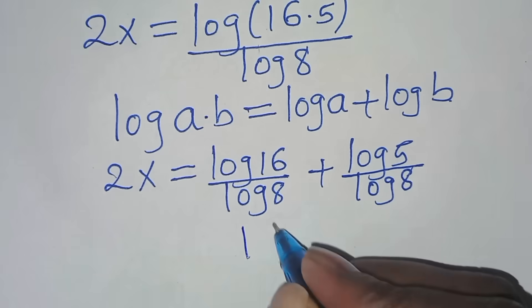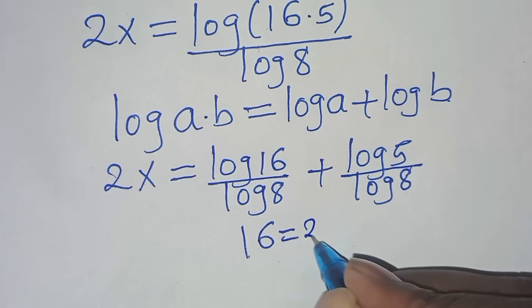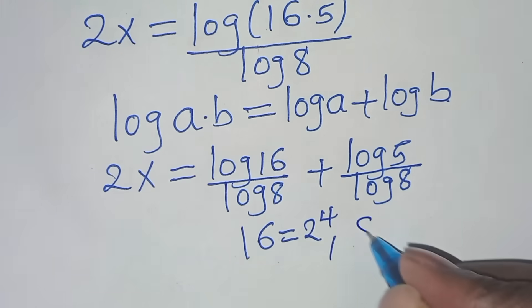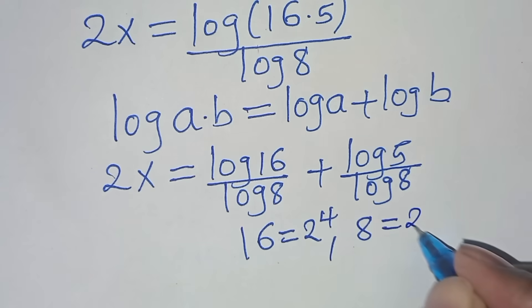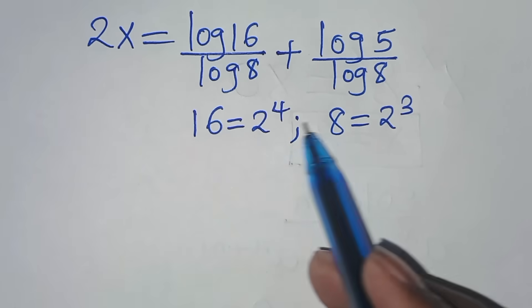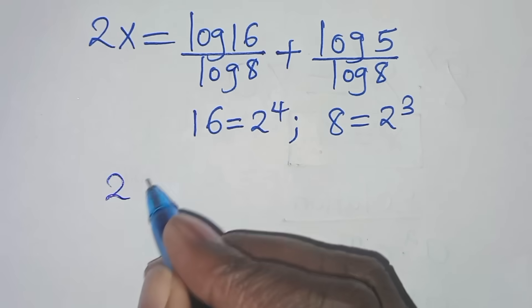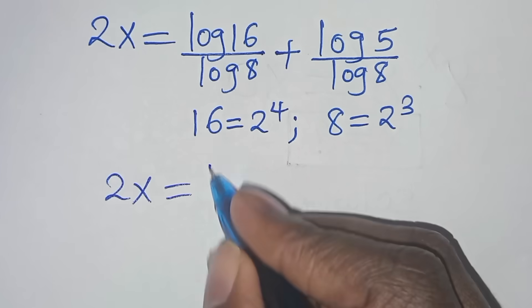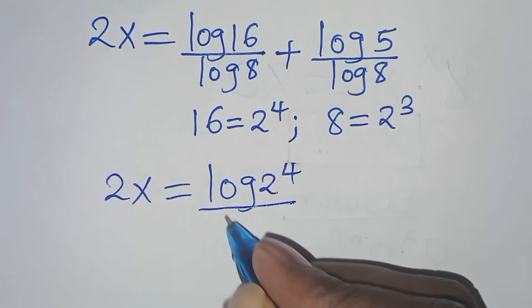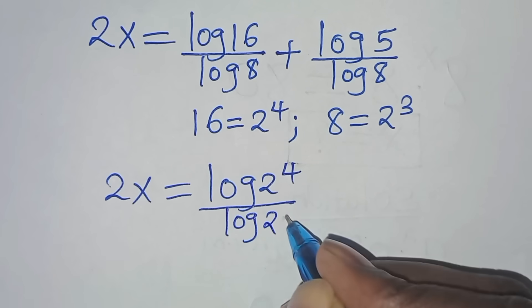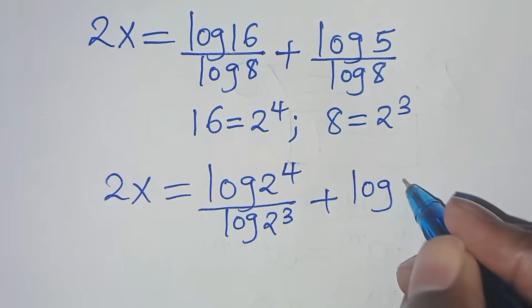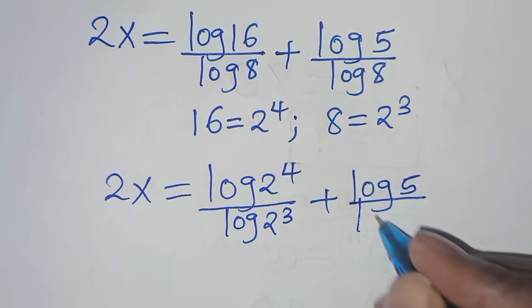Now, log(16 × 5) is in the form of log(a × b), which we can express as log(a) plus log(b). Applying this logarithm property, we have 2x equal to log(16) divided by log(8), then plus log(5) divided by log(8). The next step is that we can express 16 as 2 to the power 4, and we can express 8 as 2 to the power 3. Substituting this, we have 2x equal to log(2 to the power 4) over log(2 to the power 3), then plus log(5) divided by log(2 to the power 3).